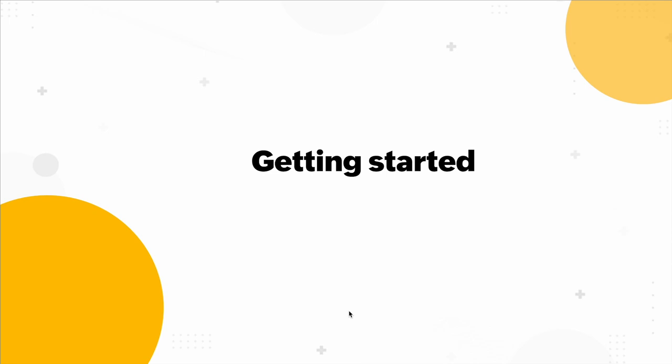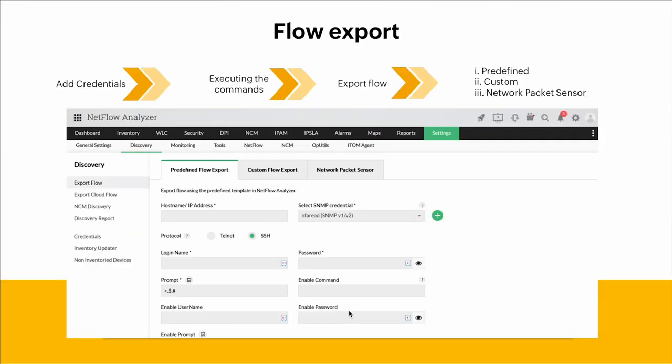Getting started — let's discuss how you carry out bandwidth monitoring with NetFlow Analyzer. The first step is to export flow from your devices to NetFlow Analyzer. You can do this in three ways: predefined flow export, custom flow export, and network packet sensor, which we'll discuss in the second part. For now, I'll show you how to export flow with predefined and custom flow export options.